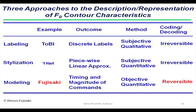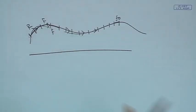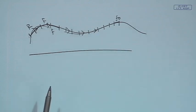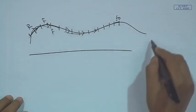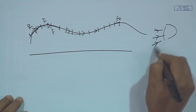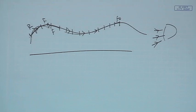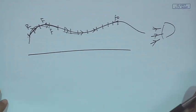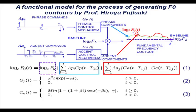Then stylization — I can approximate the whole F0 contour as some set of linear segments, then I can say I can model that — that is called stylization. Or I can generate some mathematical model where that model has some parameters and I can vary those parameters to generate this F0 contour — that is called the Fujisaki generation process model. So we will discuss details on the generation process model.